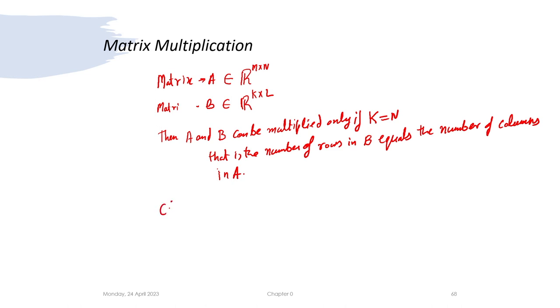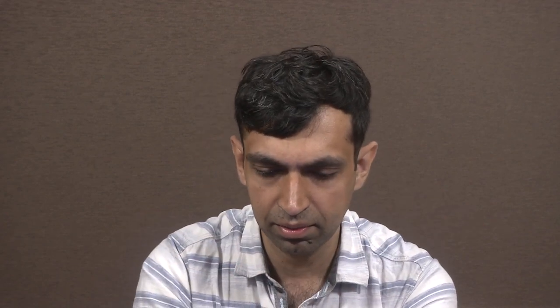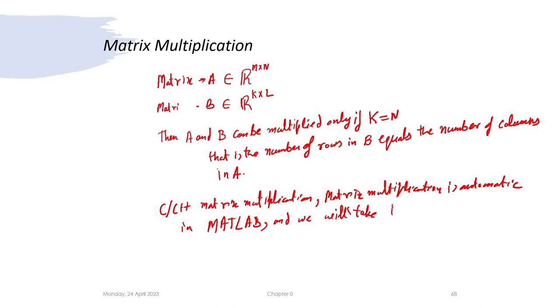In other languages such as C or C++, matrix multiplication is not built in and you have to write your own code, which is slightly complicated. But with MATLAB, matrix multiplication is automatic and we will not have to write any additional code for it. We will take this for granted for the rest of this course, but there are still some aspects of matrix multiplication that we will want to look at.